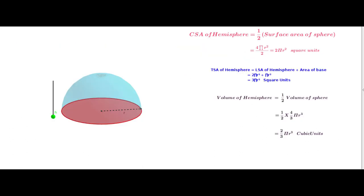In our kitchen, we observe some utensils of hemisphere shape, and the tomb of some monuments resembles a hemisphere. It is very necessary to know the surface area and volume of a hemisphere too. If we consider only the lateral surface area of the hemisphere, it is equal to half of the surface area of the sphere, that is 4πr² ÷ 2, which equals 2πr² square units. The base is a circle and its area is πr².